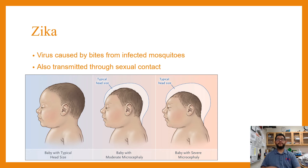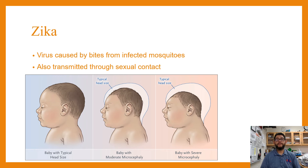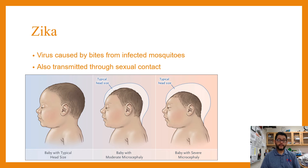The Zika virus is another one that was a problem for several years and continues to be. It is spread by mosquitoes and can also be spread through sexual contact. This leads to microcephaly — the head size of a baby can become smaller and smaller — and babies can have developmental disorders because of this.